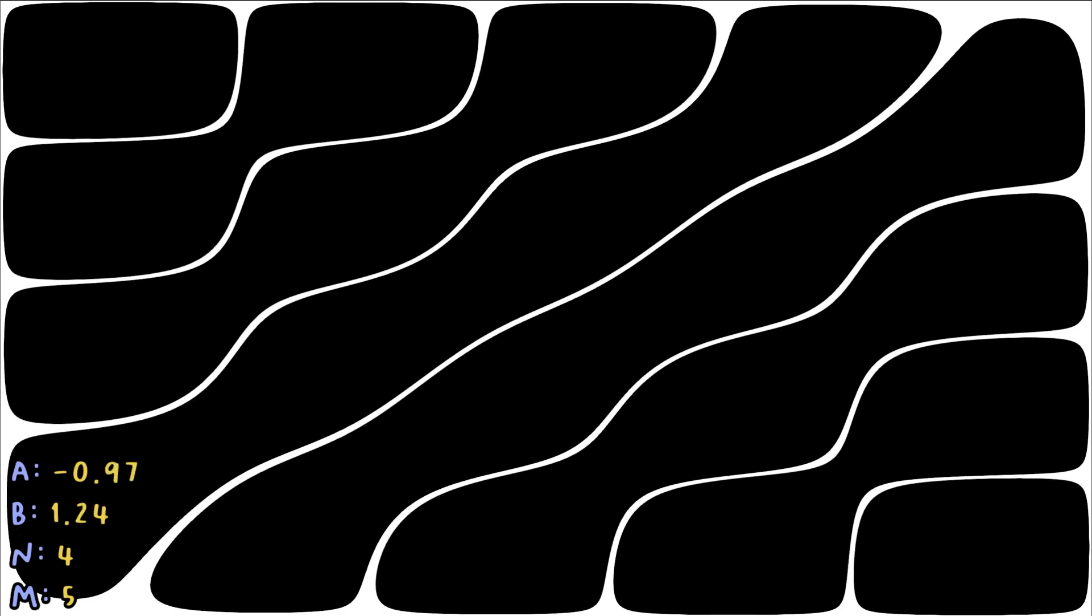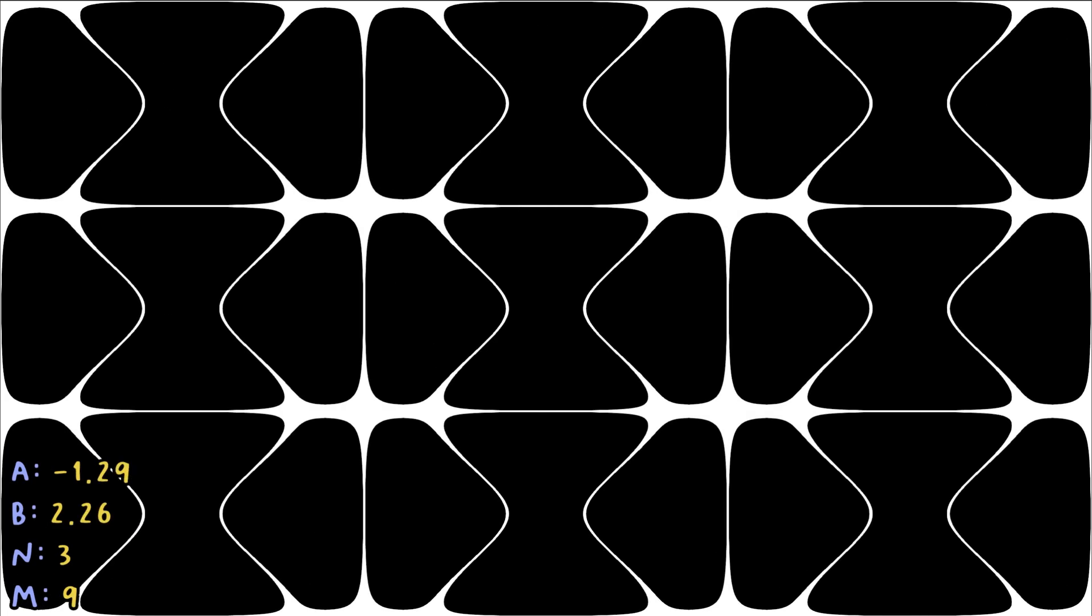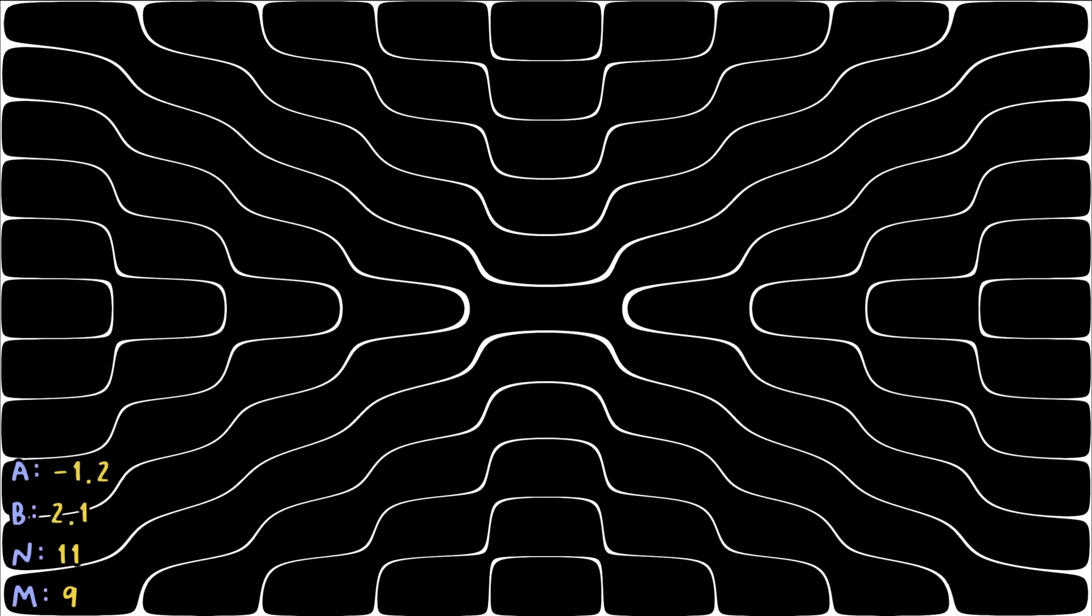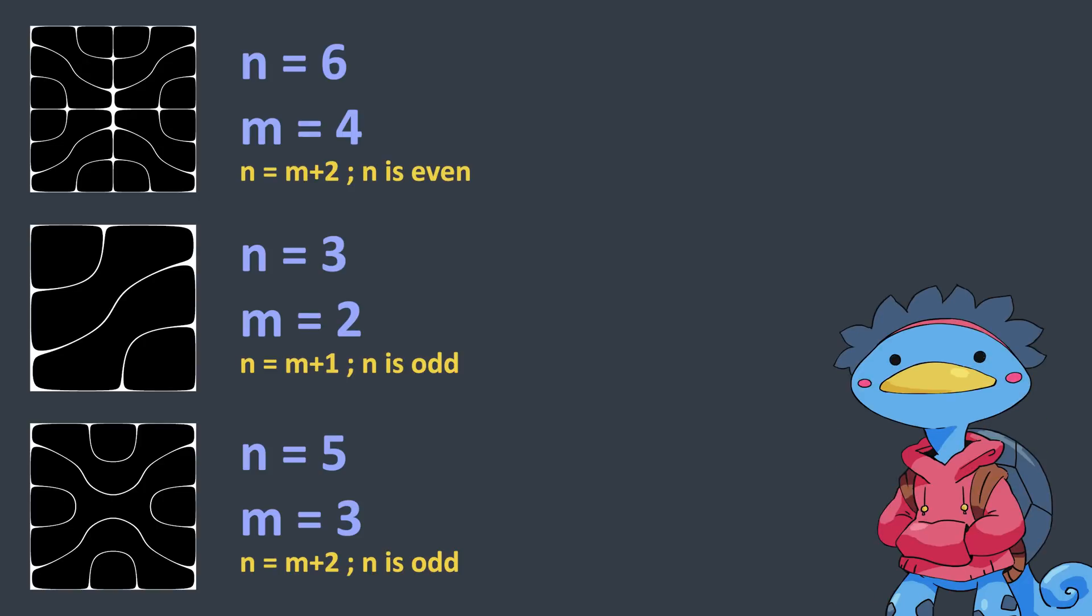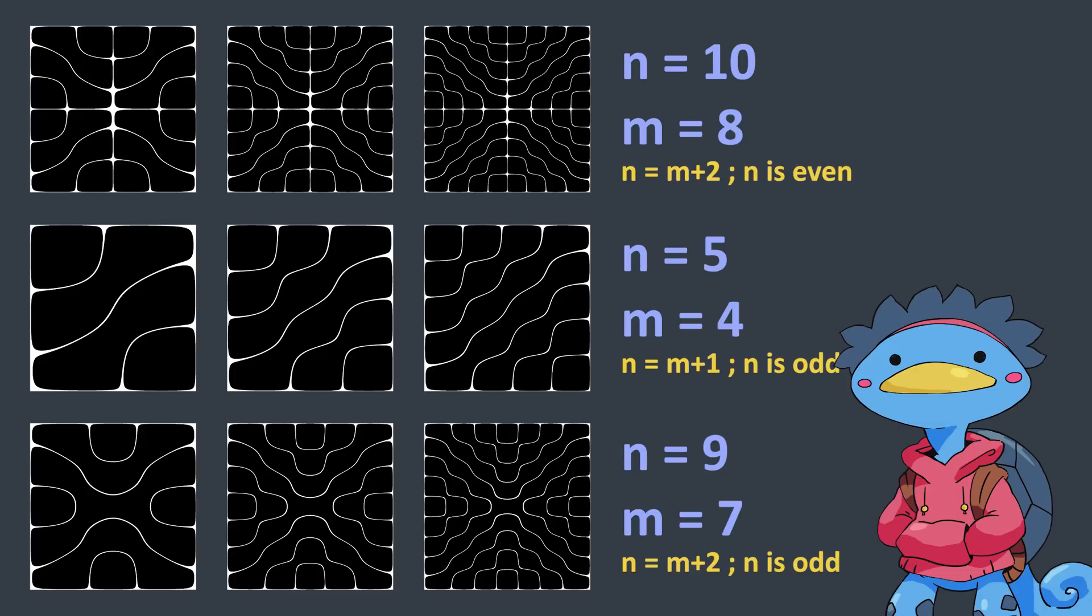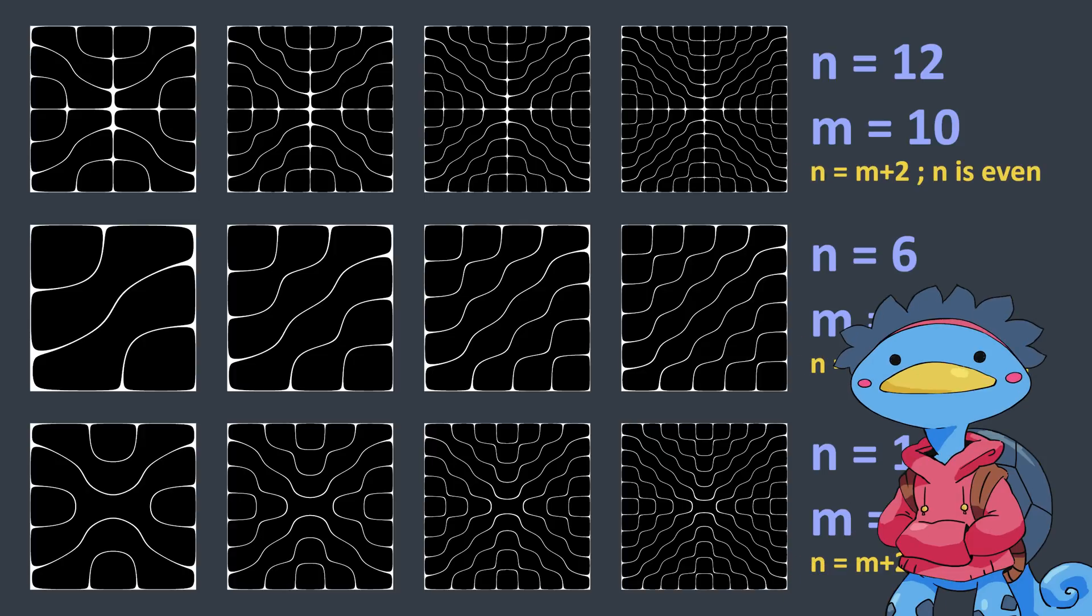So regarding the N and M integers, you'll notice that when they are equal, the pattern is a simple grid. There seem to be families of patterns depending on the relationship between N and M, and the higher they are, the more lines appear. Let me get out of your way.